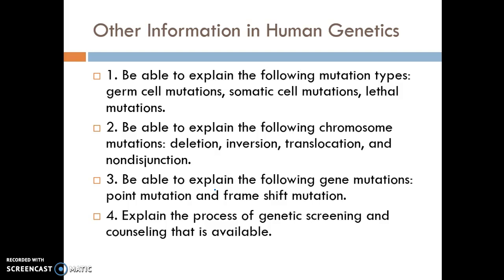The last question covers the process of genetic screening and counseling that is available. Genetic screening can occur before anybody has a child — a genetic screen of the individual or couple to see their chances of passing on a certain trait or disease. You could have screening during pregnancy through blood tests, amniocentesis, or chorionic villi sampling, which takes samples from inside the uterus and tests them. After birth, you can also do a genetic screening of the child.